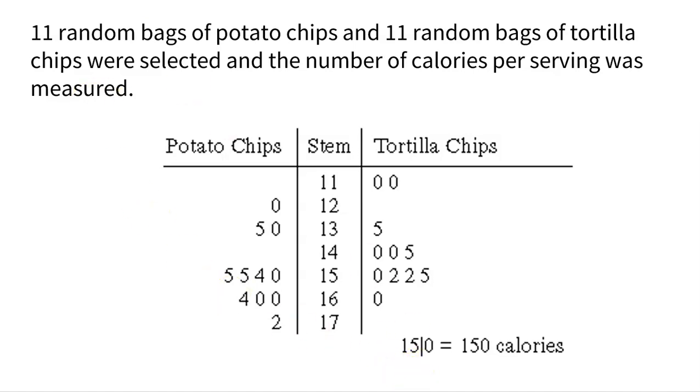So on the left is the potato chips, on the right is the tortilla chips. So again, notice my key here. So that would be 150 calories. So we have 11 in the middle. So that's one, one, and then zero. So 110 calories. And another tortilla chip bag had 110 calories per serving. No potato chips were that low, but we did have a potato chip that was 120. So again, the stem is in the middle, that'd be one, two, and we tag on the zero for 120 calories for that bag of potato chips.